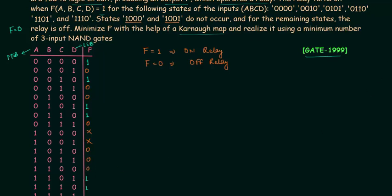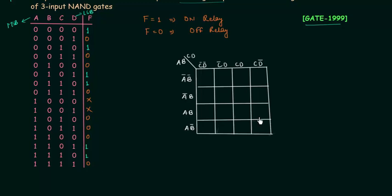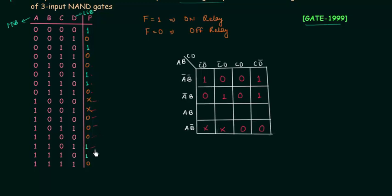We will make a 16-cell K-map because we have 4 variables. I will quickly make the 16-cell K-map, and once we have it we will fill it using the truth table. F is 1, 0, 1, 0 for the first four cases, so we have 1, 0, 1, 0. Then we have 0, 1, 1, 0. After this there is don't care, don't care, 0, 0. Then don't care, don't care, 0, 0. And for the last four cases F is 0, 1, 1, 0.